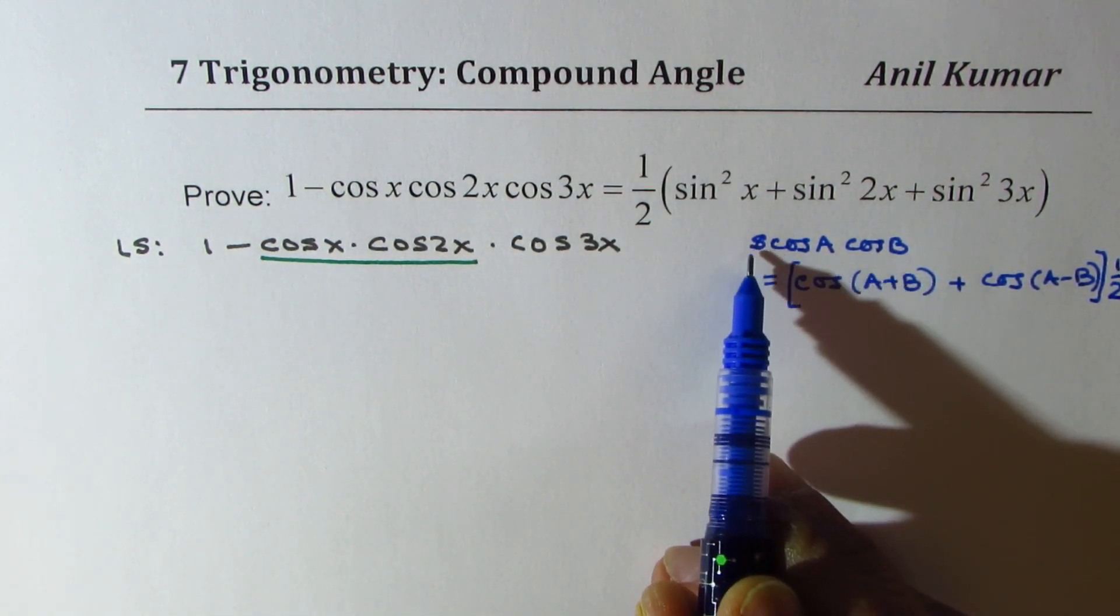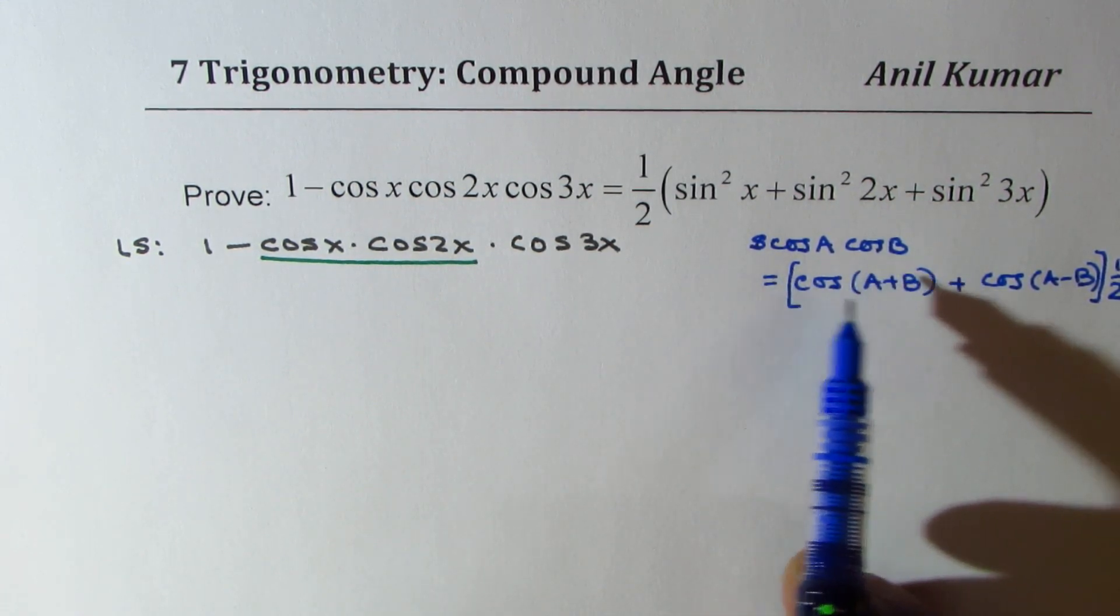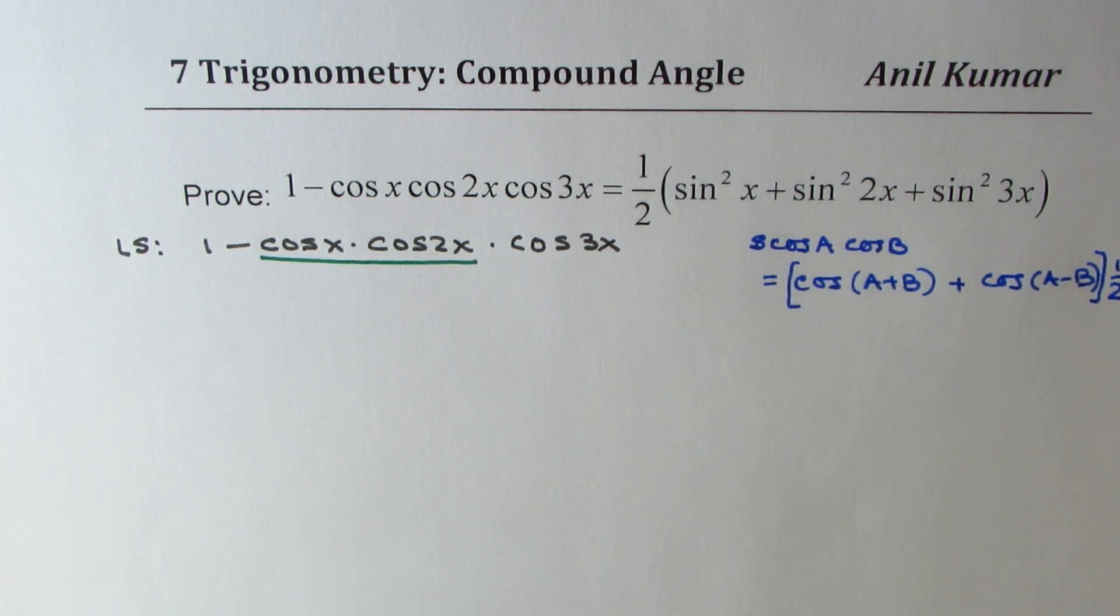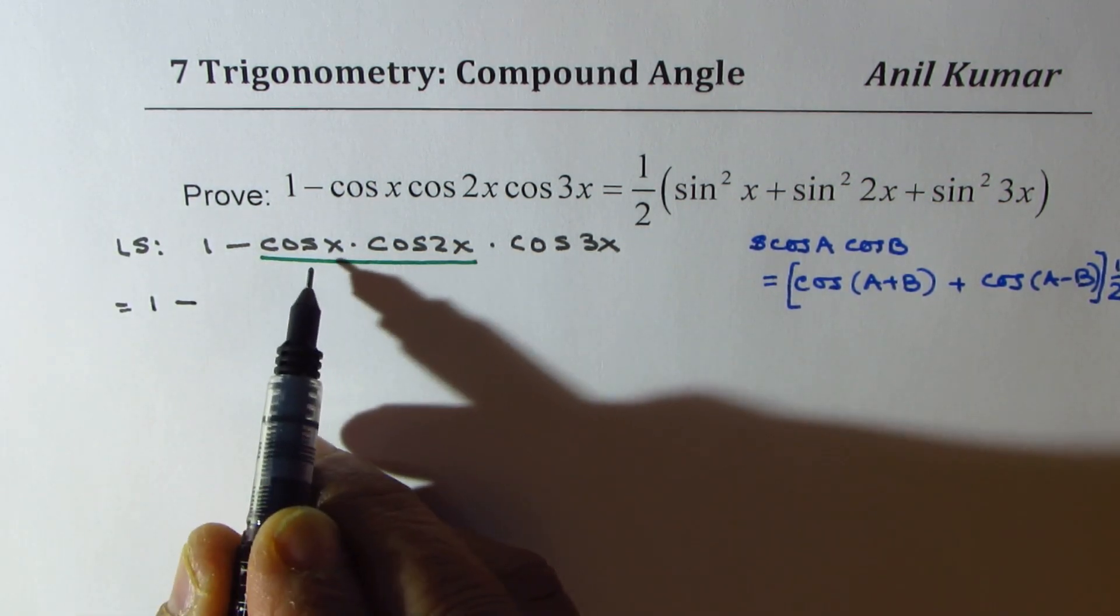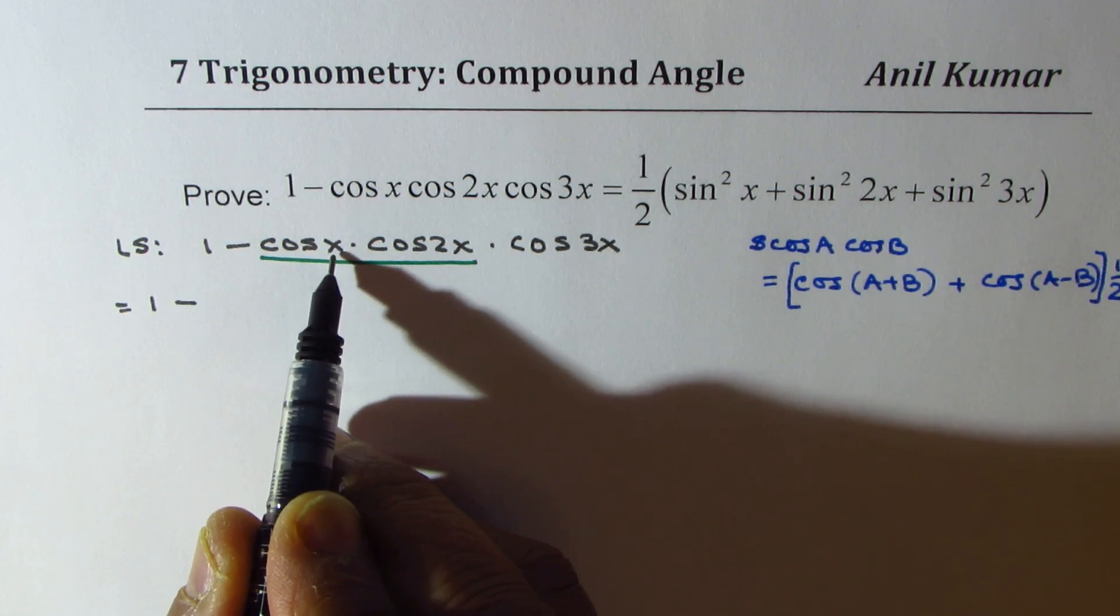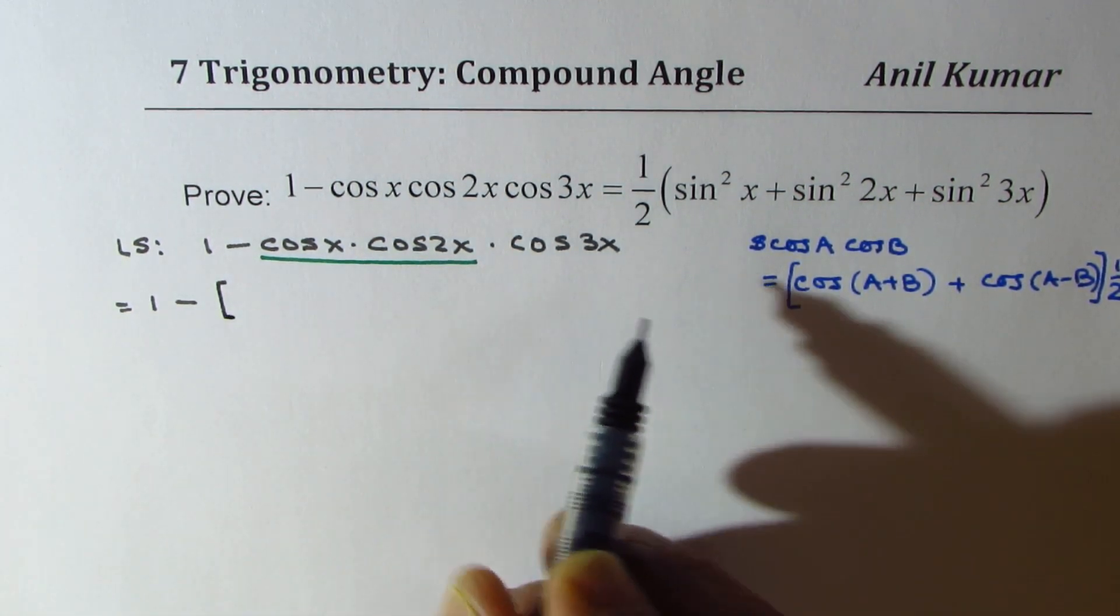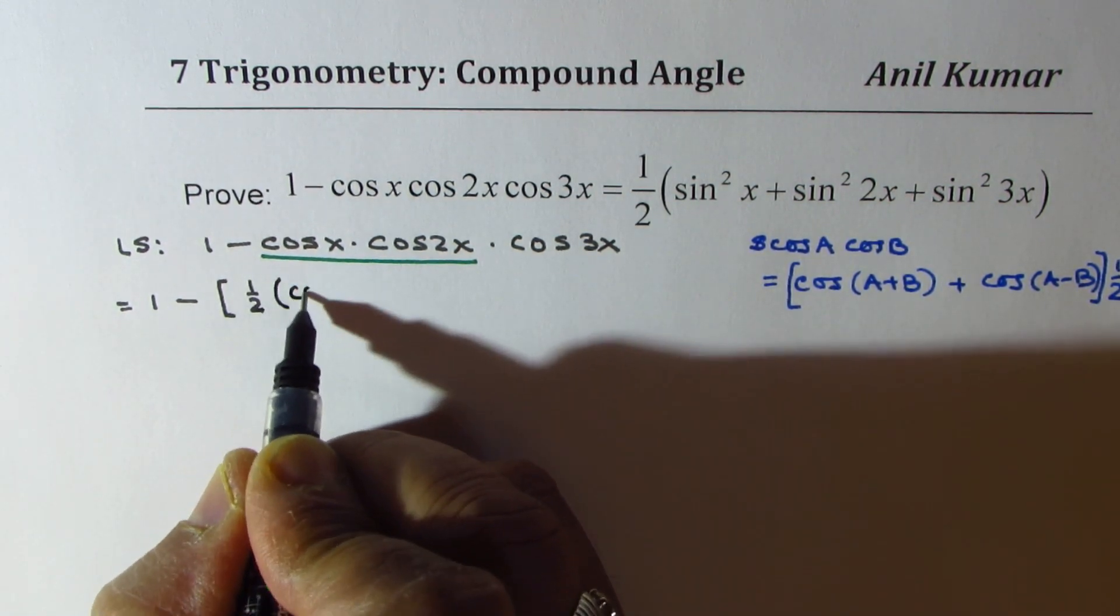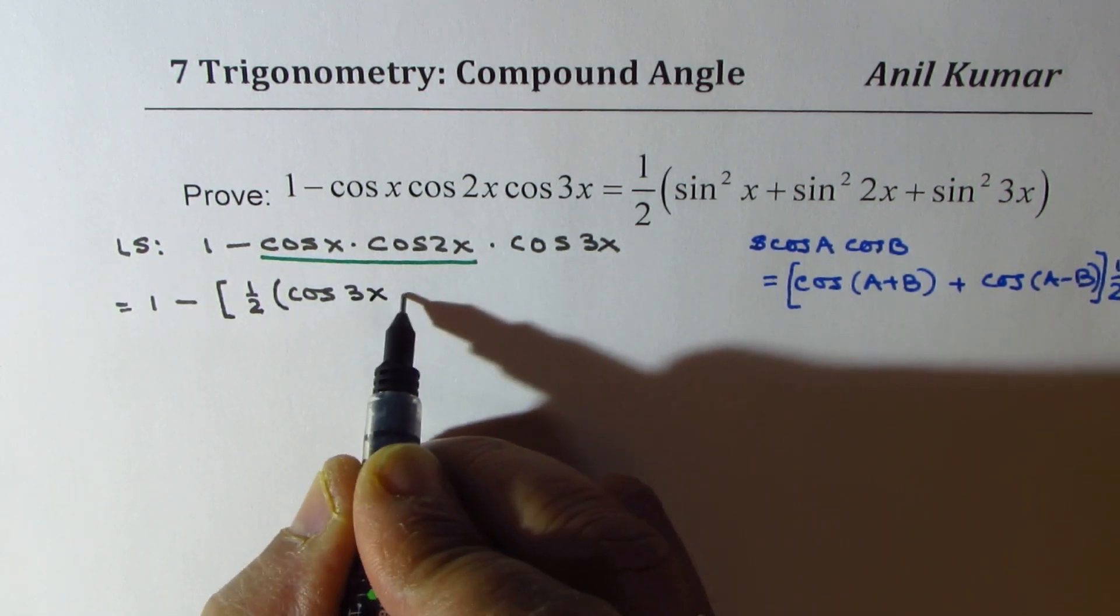So, normally we write 2 here, 2 cos a cos b is equal to all this. So, I'm slightly modifying the formula, writing cos a cos b as half of all this. So, if you apply this formula, we can say that the left side is equal to 1 minus. So, in the first two terms, x plus 2x becomes 3x. So, we'll write this as half of cos, add them, which is 3x, and then subtract them, which is x.